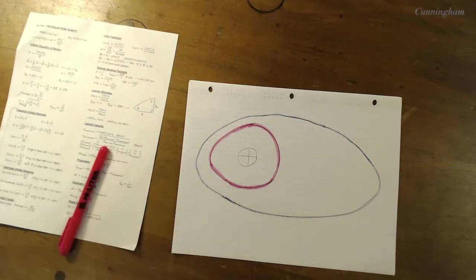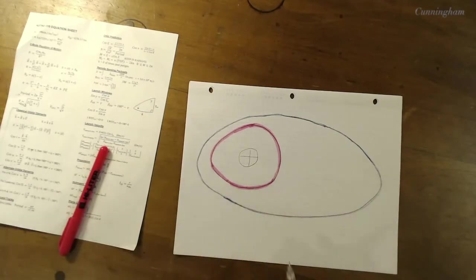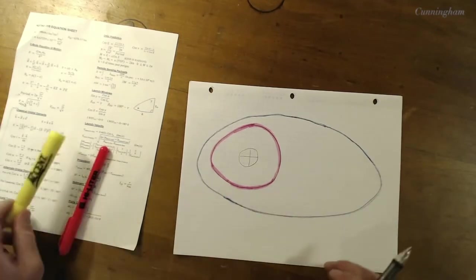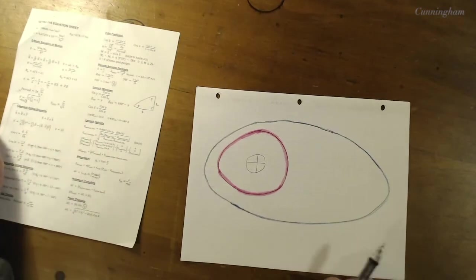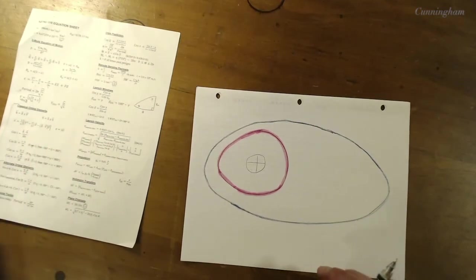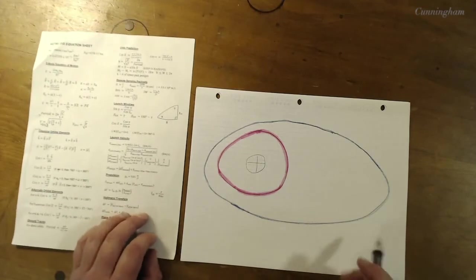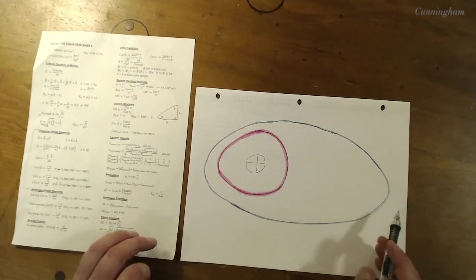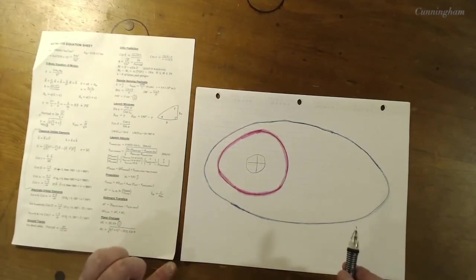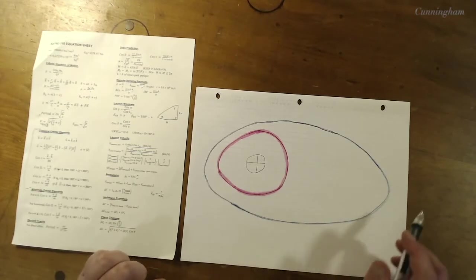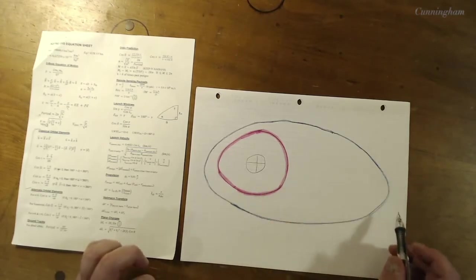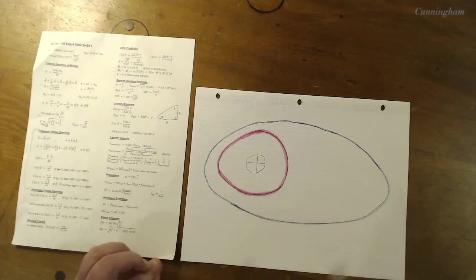So our intent is going to be to do a transfer orbit somewhere around here to get us from the blue orbit to the pink, from the outer to the inner. Okay, I'm not going to hide the ball on this one, I'm just going to go ahead and tell you the most efficient place to do a burn, and this is going to be true for plane changes too, is as far away in the orbit as you can.